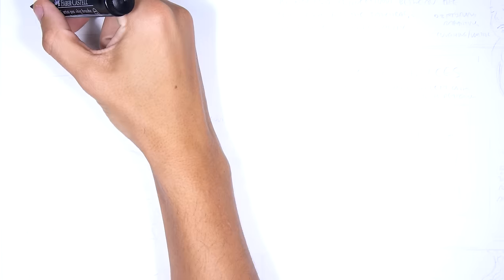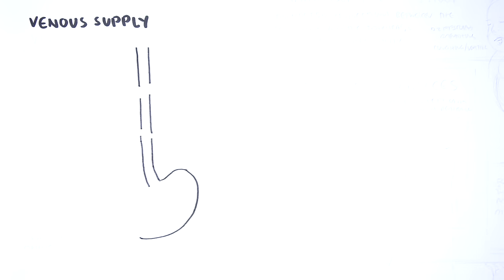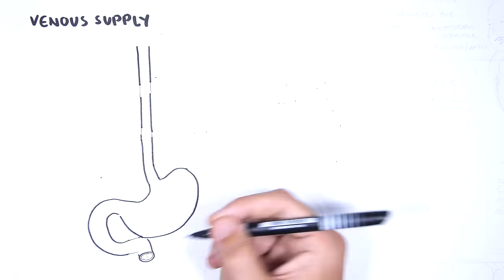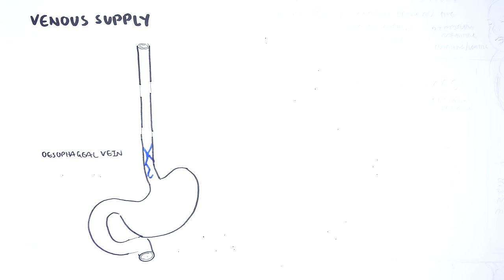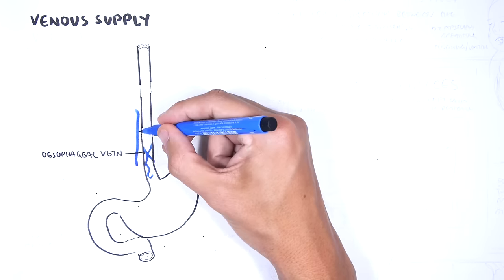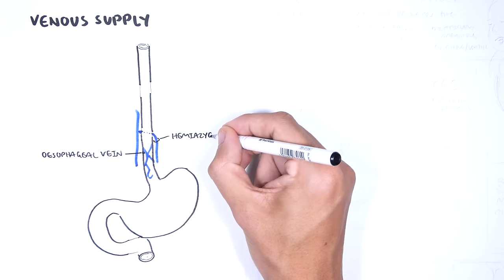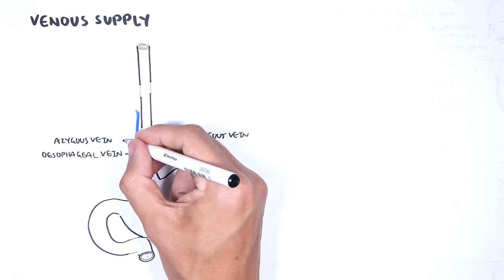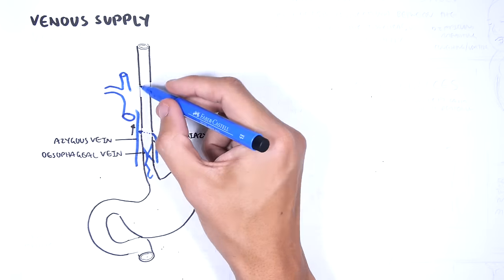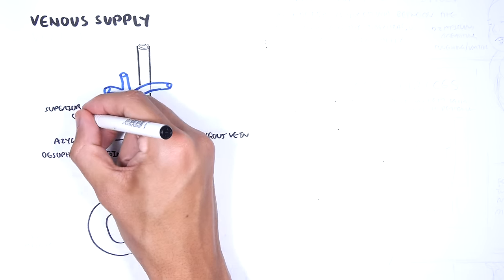The azygos vein is posterior and to the right of the esophagus and will drain blood into the superior vena cava, which leads us to the venous drainage of the esophagus. You have the esophageal vein, which drains the majority of the esophagus. The hemi-azygos vein runs left of the esophagus and joins with the azygos vein on the right. The azygos vein drains into the superior vena cava.